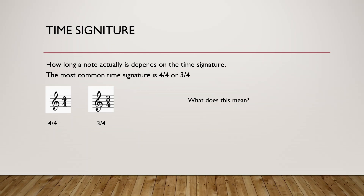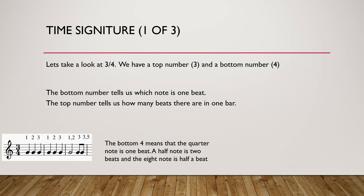How long a note actually is depends on the time signature. The most common time signatures are 4/4 or 3/4. Let's take a look at 3/4. We have a top number 3 and a bottom number 4. The bottom number tells us which note is one beat, and the top number tells us how many beats there are in one bar or measure. So the bottom 4 means that the quarter note is one beat. If the quarter note is one beat, a half note is two beats, and the eighth note is half a beat. And there are three beats in one bar.